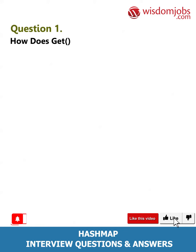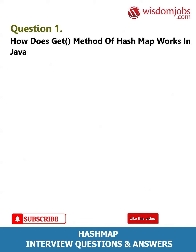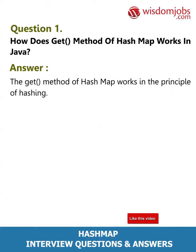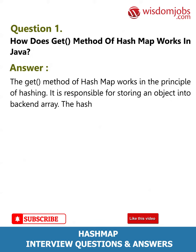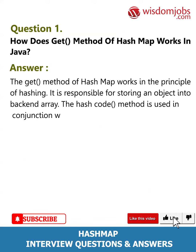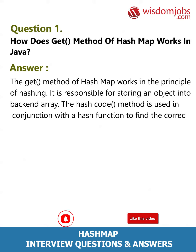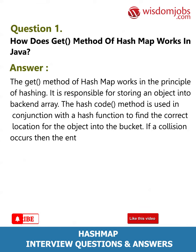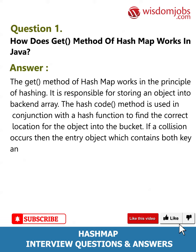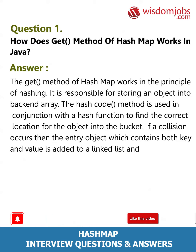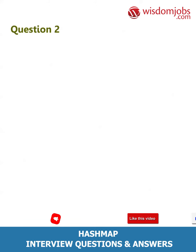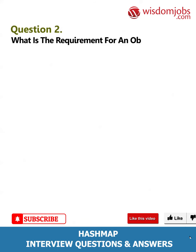Question 1: How does the get method of HashMap work in Java? Answer: The get method of HashMap works on the principle of hashing. It is responsible for storing an object into a back-end array. The hash code method is used in conjunction with the hash function to find the correct location for the object in the bucket. If a collision occurs, the entry object containing both key and value is added to a linked list stored at that bucket location.